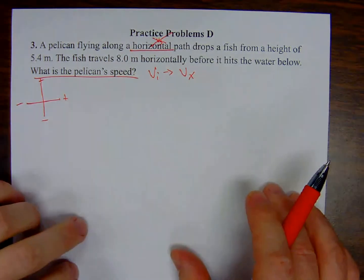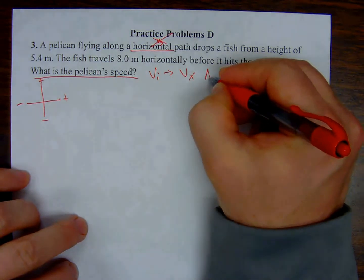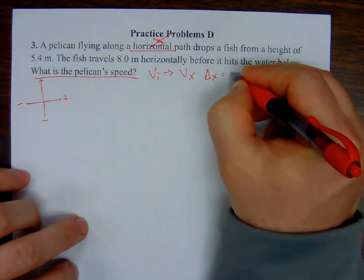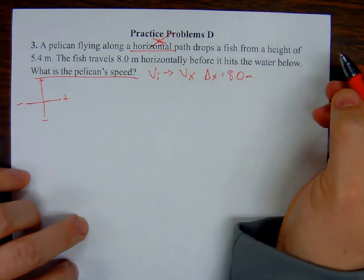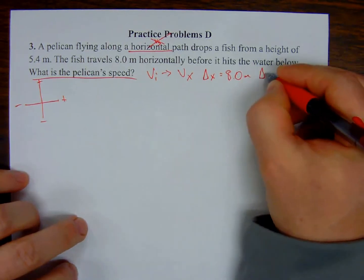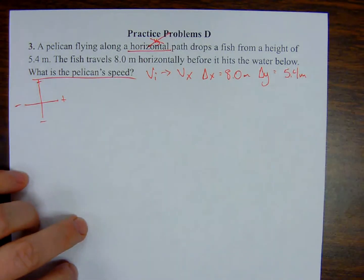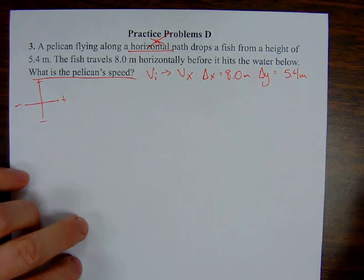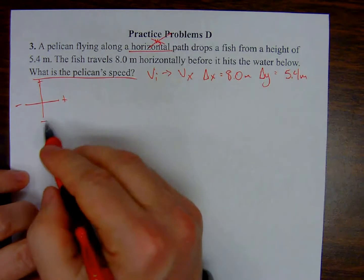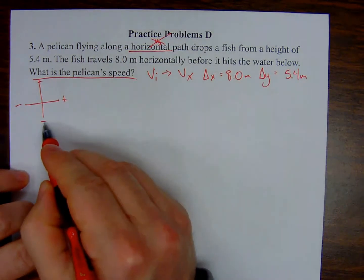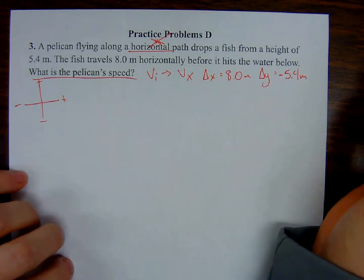What else are we given? We know that we have a delta x of 8.0 meters. We have a delta y of 5.4 meters, but remember the fish is dropping from the pelican — it's dropping down. Acceleration due to gravity is going down, and the down y direction is a negative direction, so I have to represent that with a negative sign. So delta y is negative 5.4 meters.